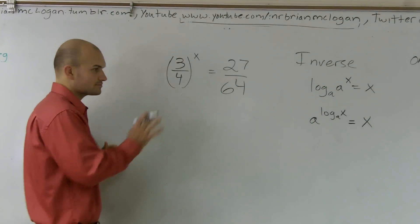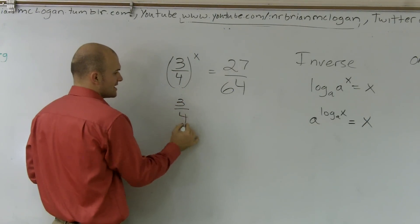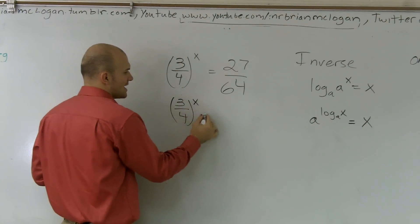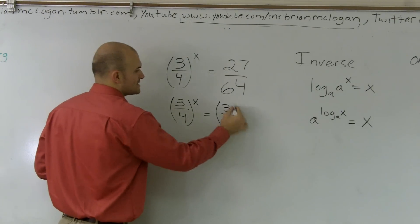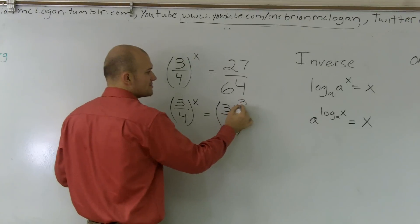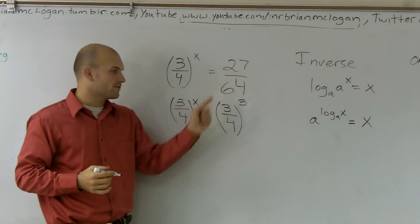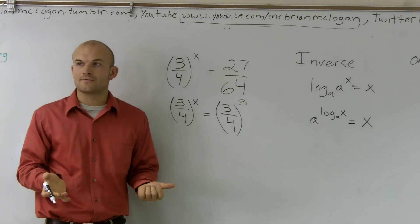And the way the relationship looks is I can rewrite this as 3 fourths to the x is the same thing as 3 fourths, well, raised to what number? Well, 3 raised to the third power gives me 27, and 4 raised to the third power gives me 64.